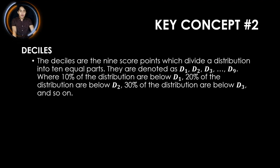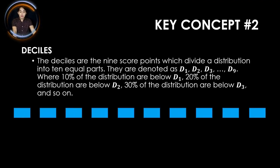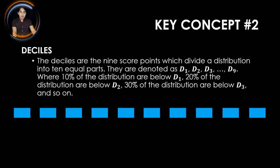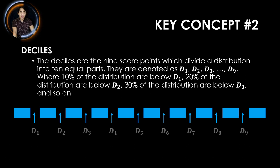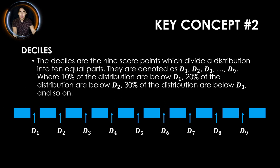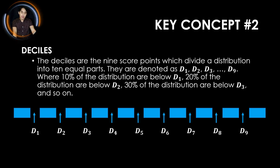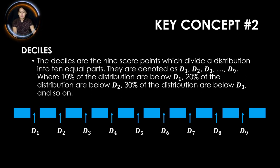To illustrate deciles, we have 10 blocks representing the whole, divided into 10 equal parts. Between these 10 blocks, we have nine score points: D sub 1, D sub 2, and so on, up to D sub 9. Each point represents 10% of the distribution. From D sub 1 at 10%, D sub 2 becomes 20%, D sub 3 is 30%, and so on, up to D sub 9 which is the 90% of the distribution.